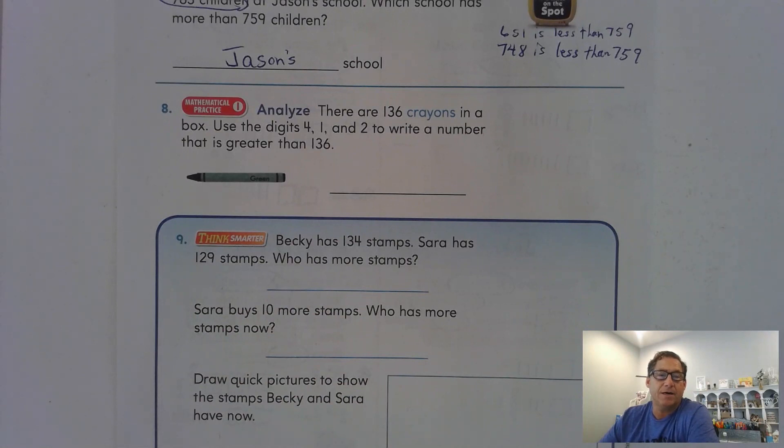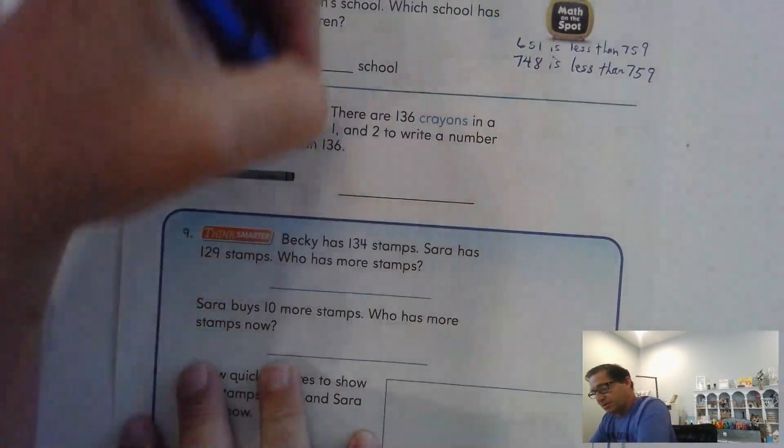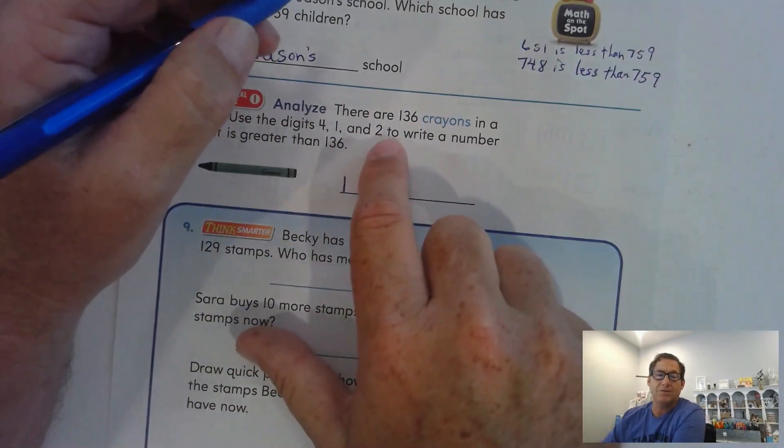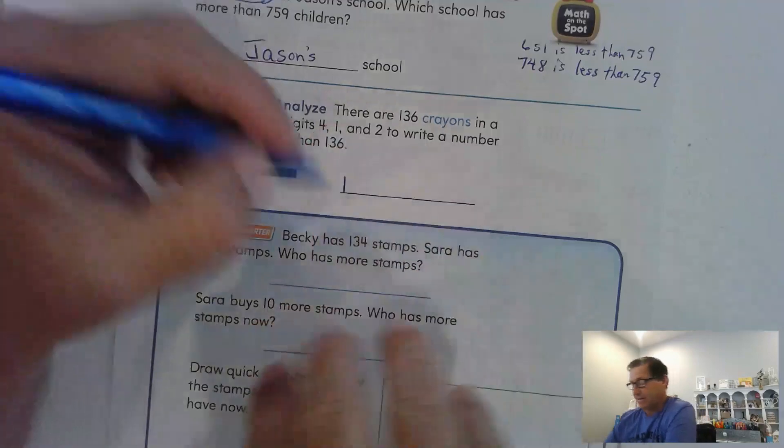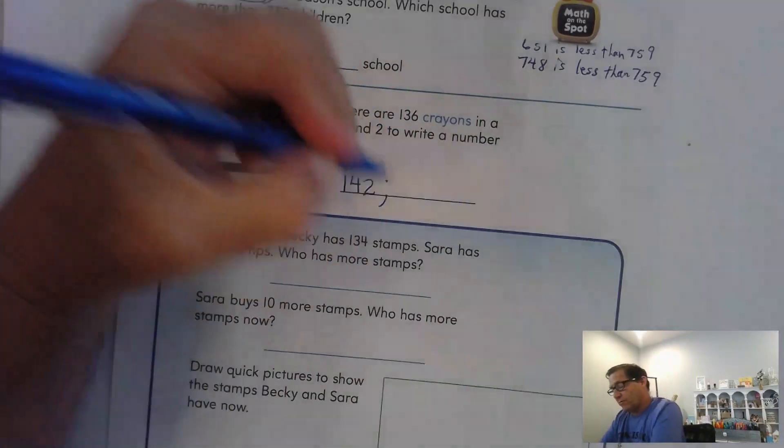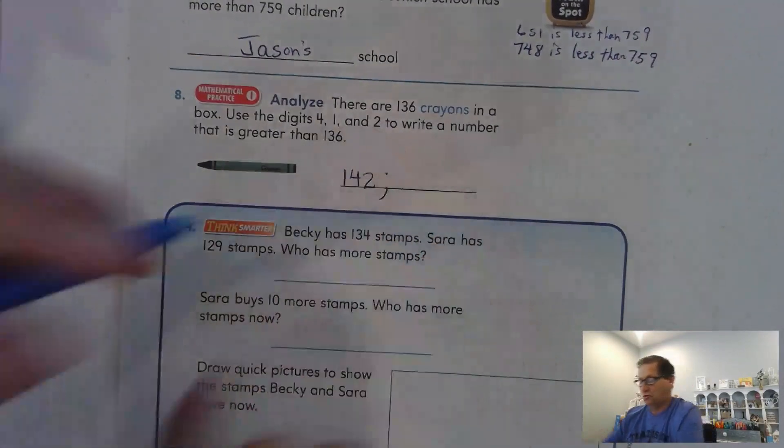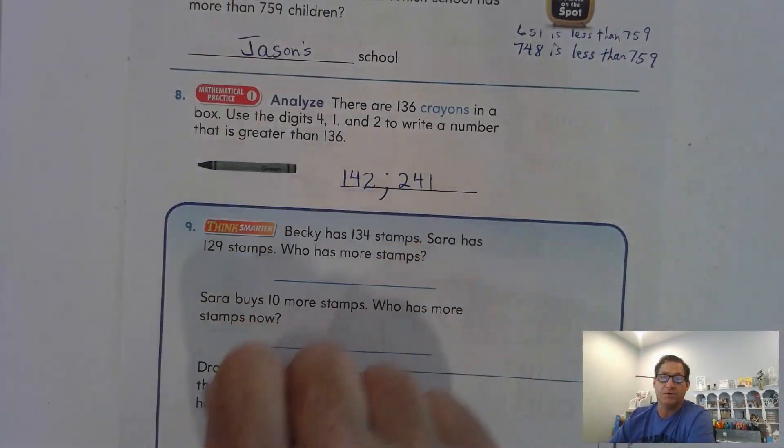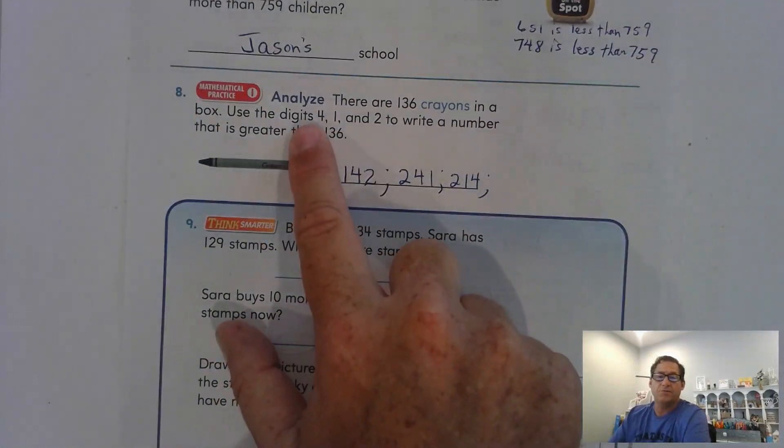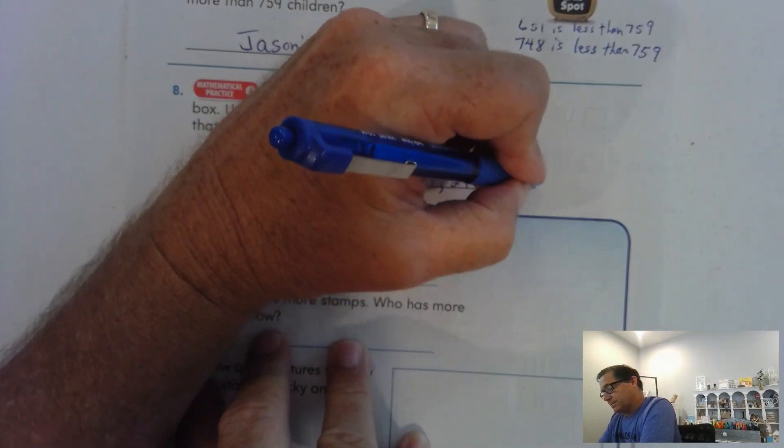Number eight. There are 136 crayons in a box. Use the digits 4, 1, and 2. Write a number that is greater than 136. Well, there's a couple possibilities. Let's say we have hundreds. Let's start with that the hundreds are the same in both. So if we have 136, and we're going to use one as the hundreds, two would be less than three. So that's not greater than the three tens, but 142 is. That's one possibility. What if we had more hundreds than 100? Could I use 200? Sure. I could say 241. That's bigger than 136. Could I say 214? Sure. Could I use four in the hundred place? Oh, yeah. Absolutely. Because 400 is more than 100. So I could also use 421. So any of those numbers work to give us a value greater than 136.